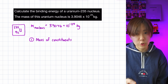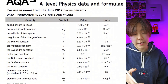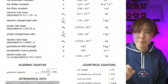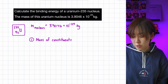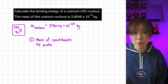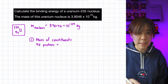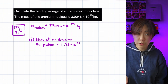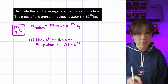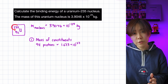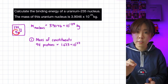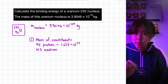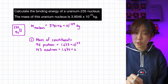Let me look at the mass of an individual proton and neutron from my data booklets. Notice that there is a tiny difference between the mass of a proton and a neutron. A uranium nucleus has 92 protons according to the atomic number, so the mass of all the protons in a uranium nucleus is 92 times the mass of one proton. The number of neutrons is the mass number minus the atomic number — that's 143 neutrons. Multiply that by the mass of one neutron.